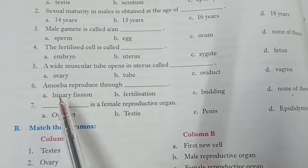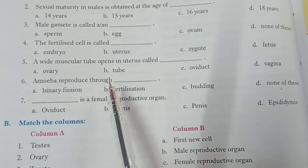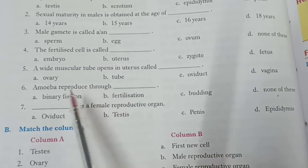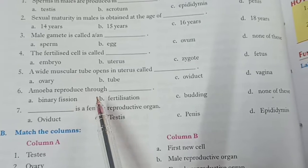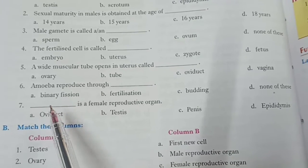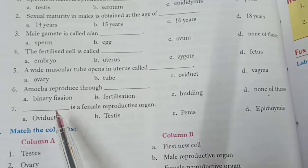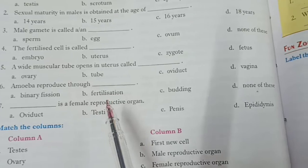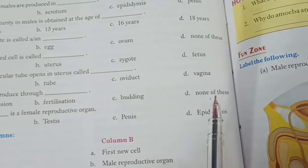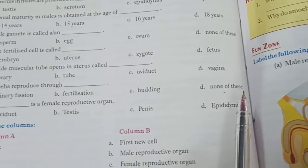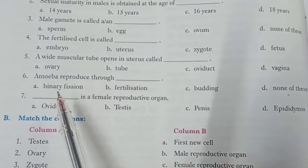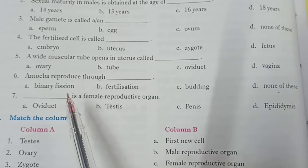Sixth question: amoeba reproduces through — amoeba kis process ke through reproduce karta hai? Options are binary fission, fertilization, budding, and D. none of these. Answer will be binary fission.